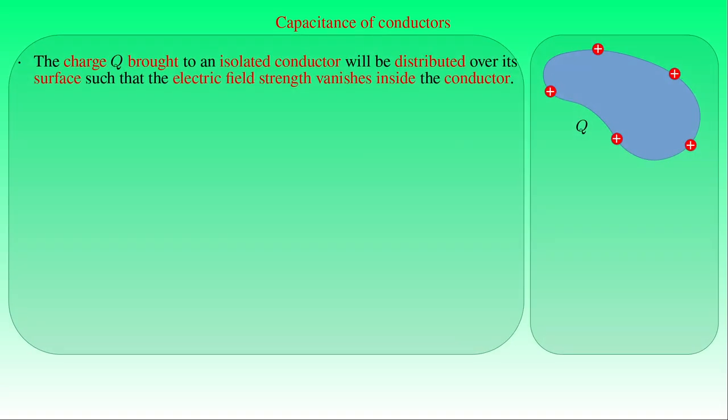We introduce a fundamental concept in electrostatics called capacitance. If we bring electric charge Q to an isolated conductor far from other conductors, the charge will be distributed over its surface such that the electric field strength E vanishes inside the conductor. The distribution of charge over the surface of a conductor is unique, and there is no other way to distribute the charge so that the field could be cancelled out within the conductor.